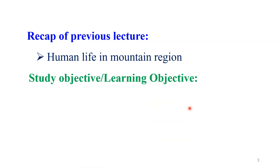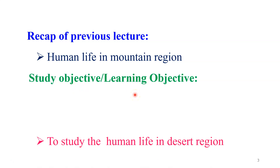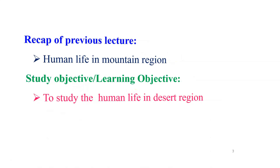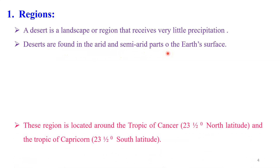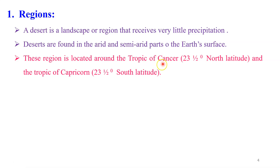You know that, dear students, in the last lecture we have already discussed detailed information about human life in the mountain region. For today's lecture, we have a study objective or learning objective that is very simple: to study the human life in the desert region. The desert is a landscape or region that receives very little precipitation. Deserts are found in arid and semi-arid parts of the Earth's surface. This region is located around the Tropic of Cancer and the Tropic of Capricorn.